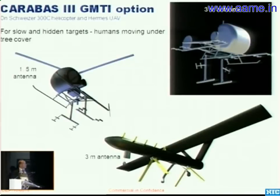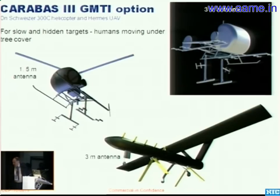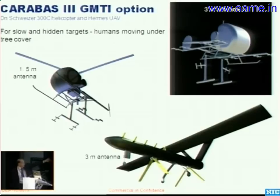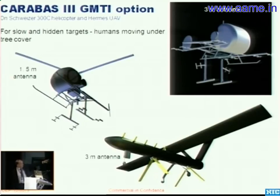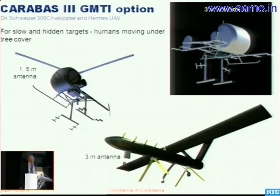GMTI is another application we are involved in. We typically use displaced phase center antennas. The application is for seeing small moving targets like humans in forest, which is of course an important subject. A typical UAV implementation is on the Hermes 450 UAV, where we use electrically small antennas deployed as monopoles with the body of the UAV as a counterweight, allowing a fairly small antenna installation.